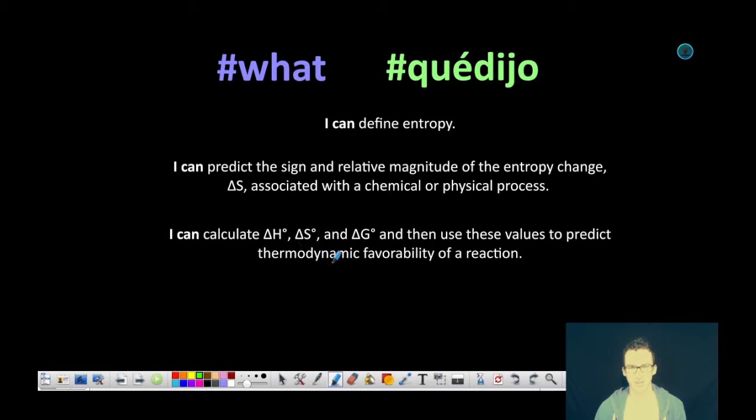Now let's break that down a little bit because today's lesson is definitely some things that we haven't learned about in the first year chemistry course. The first thing we're talking about is what the heck entropy is. We're going to define it and then we are going to predict the sign and relative magnitude of the entropy change, delta S, associated with a chemical or physical process.